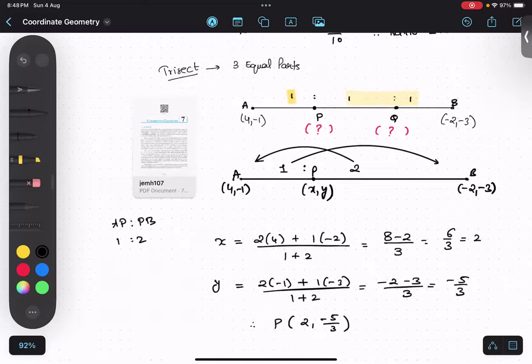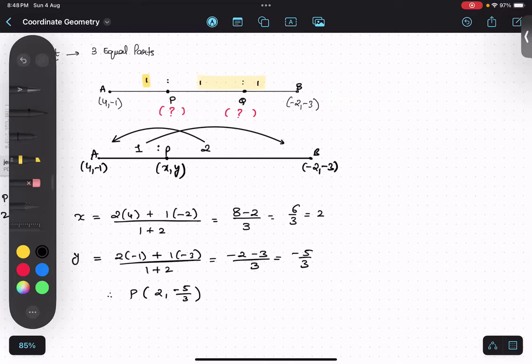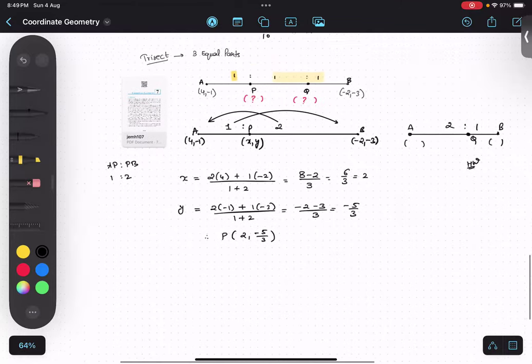I'm not going to do it for Q. You guys have to do it for Q. I'm going to take point A, point P, and this time point Q. What is the ratio now? Two is to one, very good. Please draw this diagram and do this as your homework. You can take a screenshot of this thing quickly.